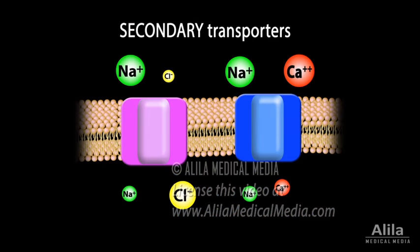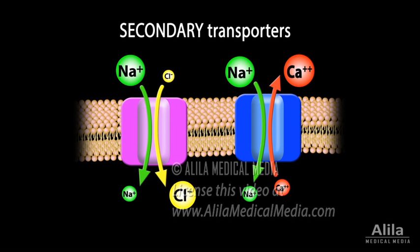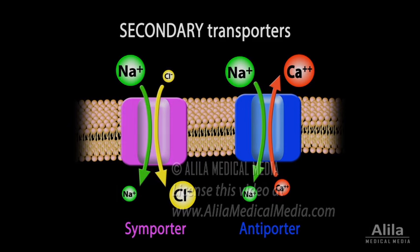Another type of ion transporters, known as secondary transporters, do not use ATP directly. Instead, they move one ion down its concentration gradient and use that energy to power the transport of a second ion. Symporters transport the two ions in the same direction, while antiporters pump the coupled molecule in the opposite direction.